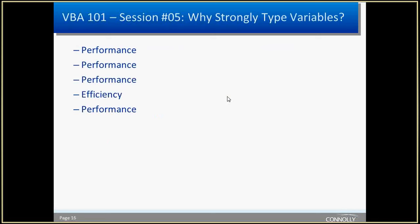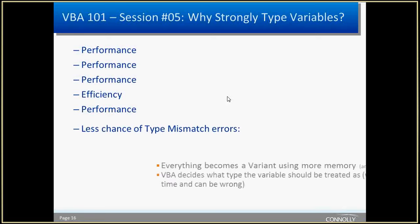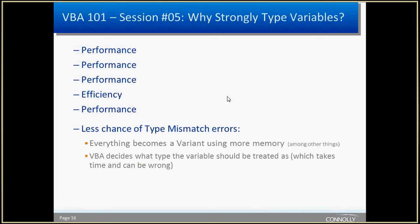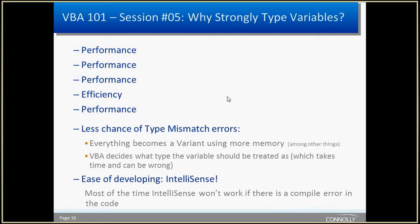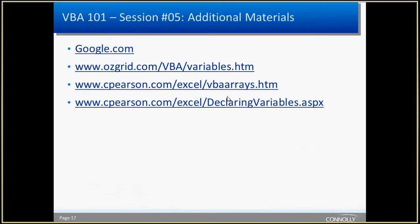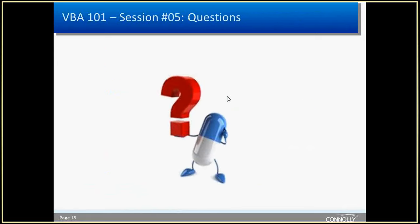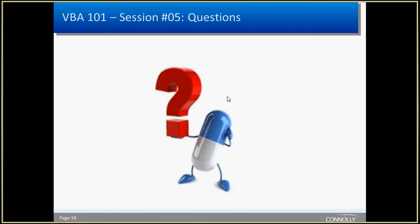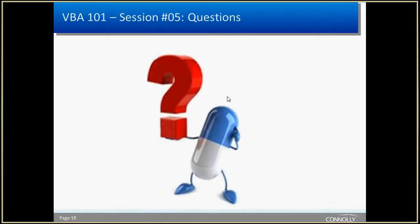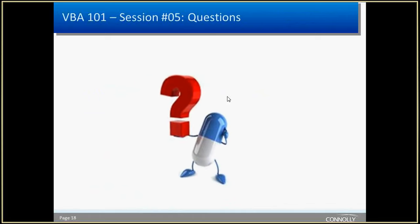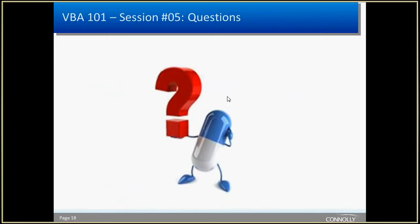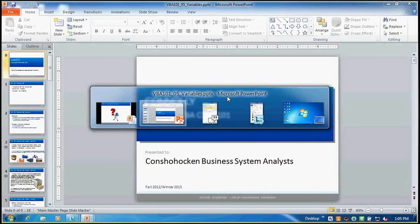Why should you strongly type your variables? Because of performance and efficiency, there's also less chance of mismatch errors. And back to IntelliSense — because I'm lazy and I like that thing when it works right. Here's some additional materials, and I'm going to stop the recording. If you guys have to go, you have to go. If anyone has any questions, I'm available now for however long you can keep me away from actual work.